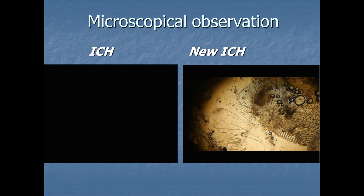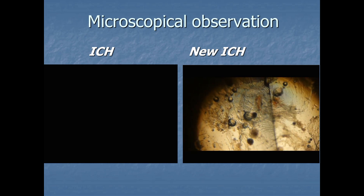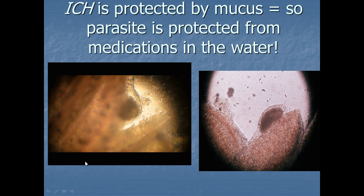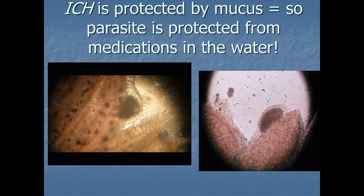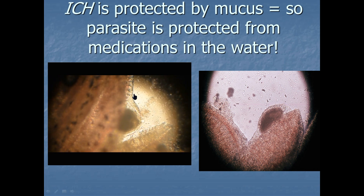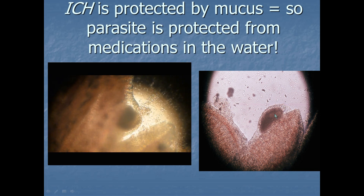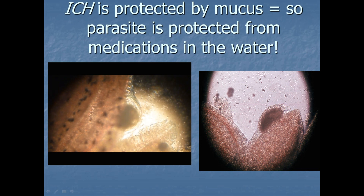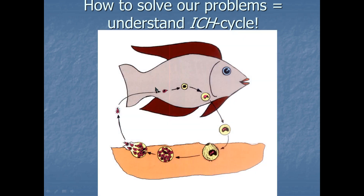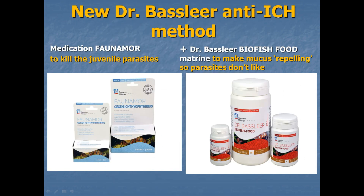More white spots here on the skin of the fish. The important thing to know is that ick is protected by the mucus — they are sitting underneath the mucus, as you can see here in the gills. That is where they are protected from any medications in the water, so the medications cannot reach the parasite. To solve our problems, we have to understand the ick cycle: the little parasite invades the fish underneath the mucus, the skin, and the gills, where it becomes mature after several days. Usually after seven days it reproduces and produces many baby parasites which can re-infect the fish. That is the stage — the baby parasite — that we can kill with medications in the water.